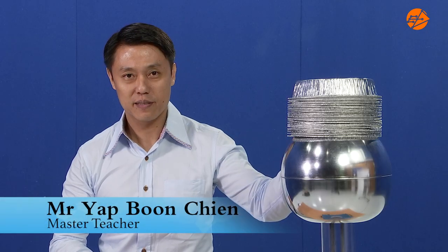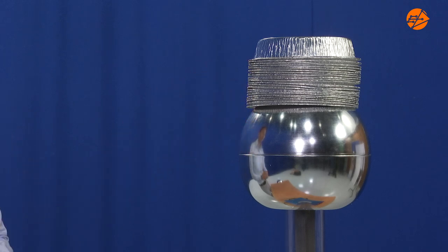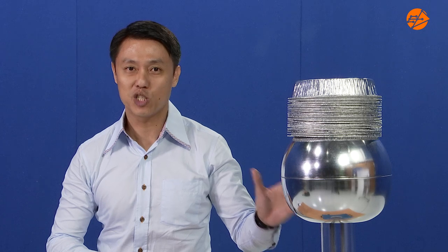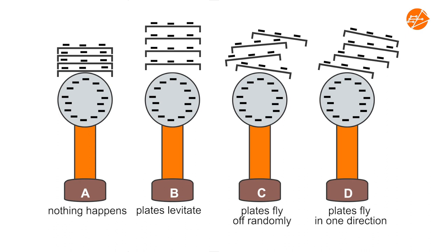We have some pie plates on the dome of the uncharged Van de Graaff generator. Predict what will happen to the pie plates when the generator is charged up. Here are four possible outcomes. Which outcome do you expect and why?